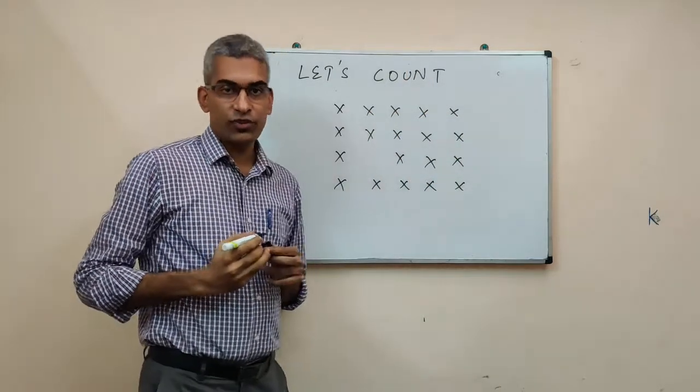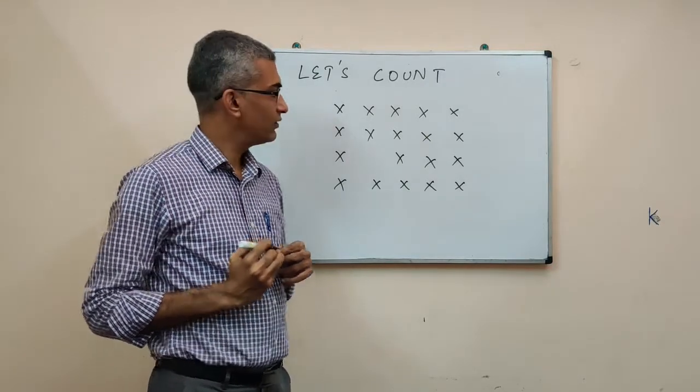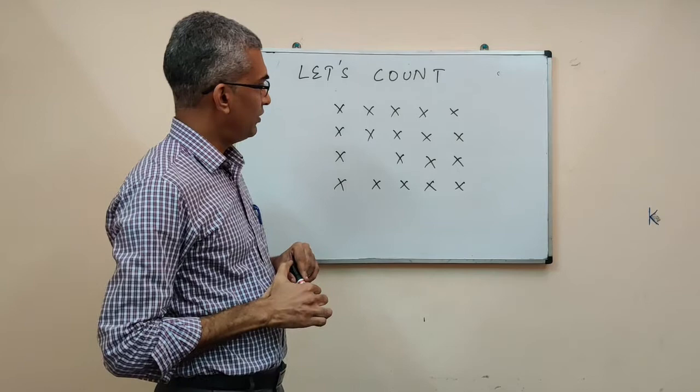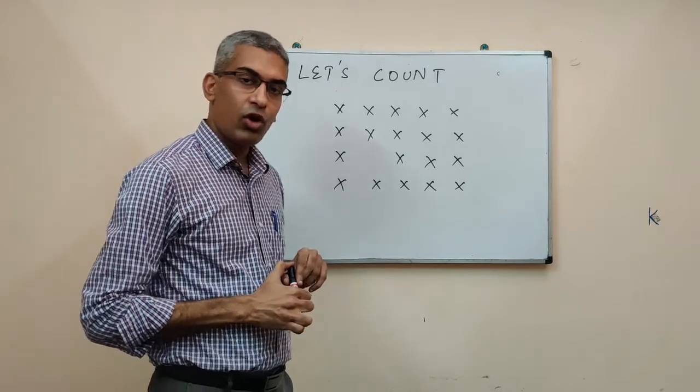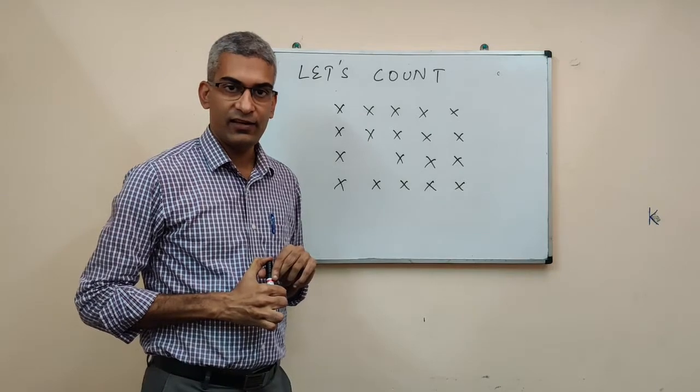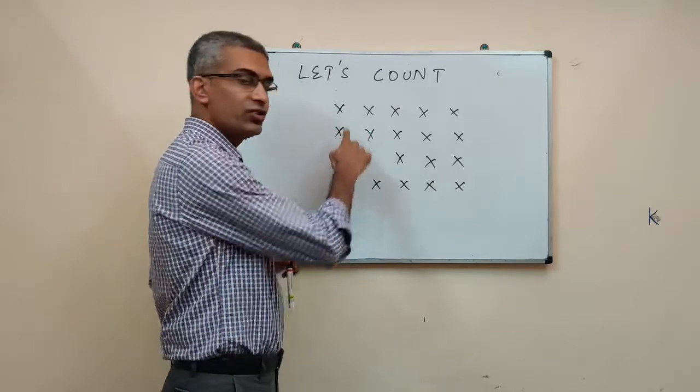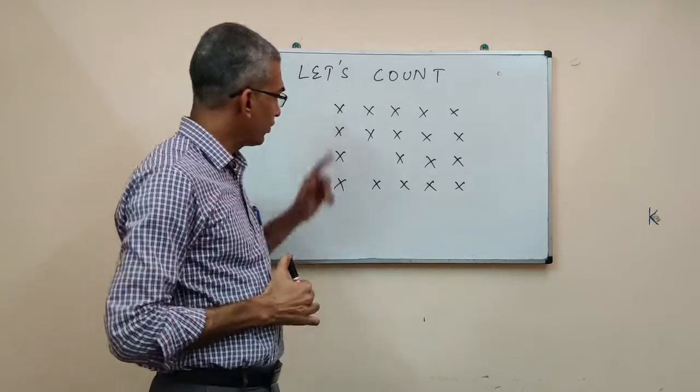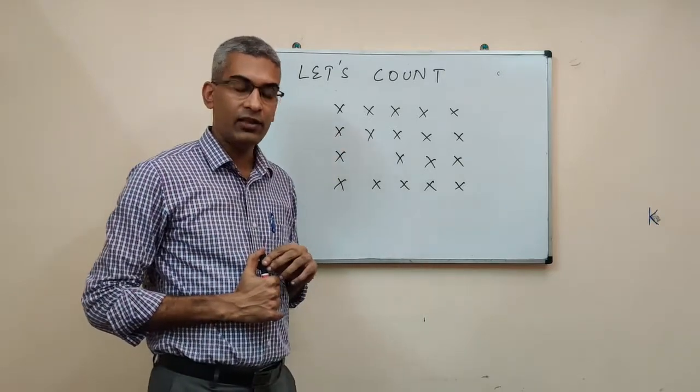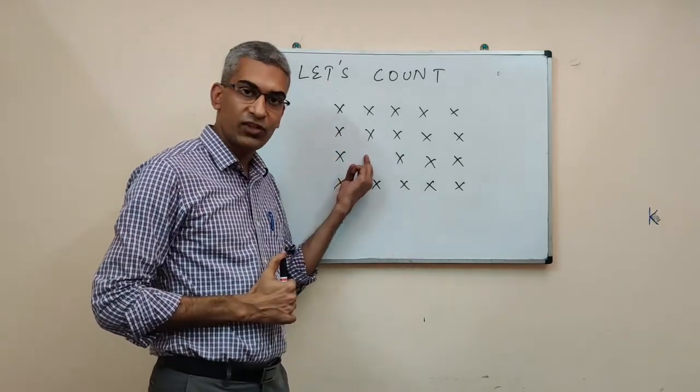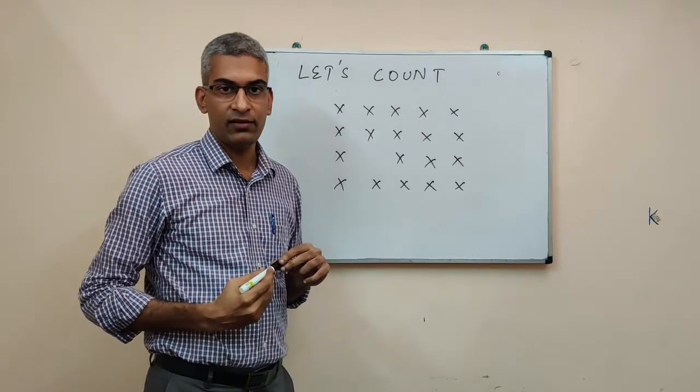I have drawn some X's on the board. Can you tell me how many X's are there? You would all give me the answer 19. Now let us focus our attention on how you did this problem. You would have observed that there are 4 rows and 5 columns. So 4 into 5, 20. But there is one X missing here. So 20 minus 1, 19.